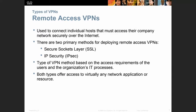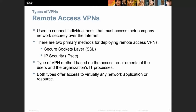Remote access VPNs are used to connect individual hosts that must access their company network securely over the internet. There are two primary methods for deploying remote access VPNs: Secure Socket Layer (SSL) and IP Security (IPsec). These were also discussed in the previous material. The VPN method chosen is based on user and organizational access requirements and IT processes.